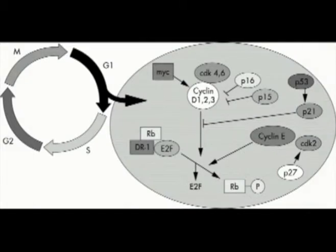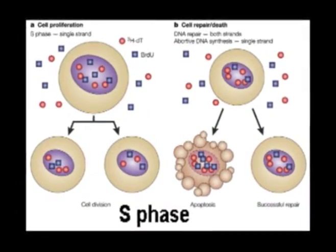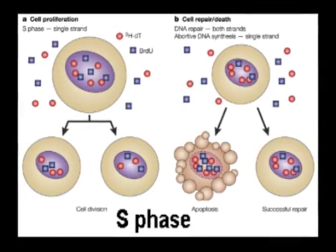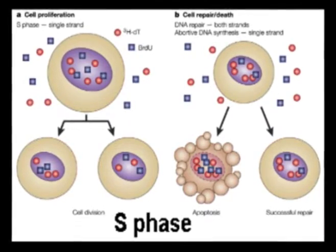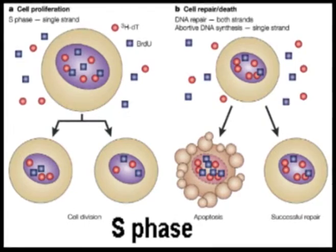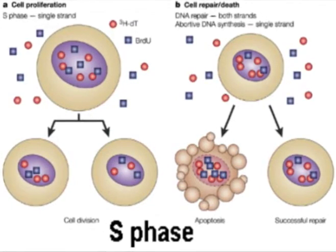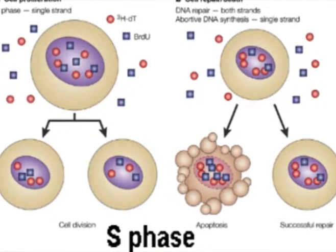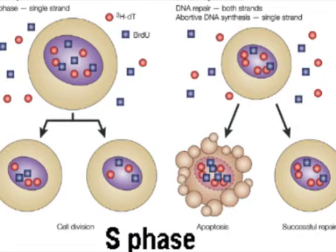S phase: During the S phase, or synthetic phase of interphase, replication of DNA and synthesis of histone proteins occur. At the end of S phase, each chromosome has two DNA molecules and a duplicate set of genes.